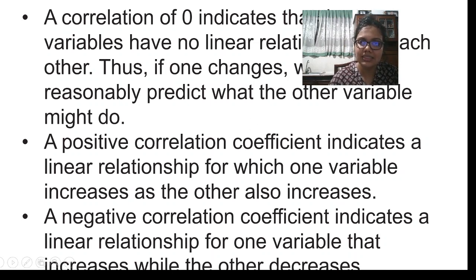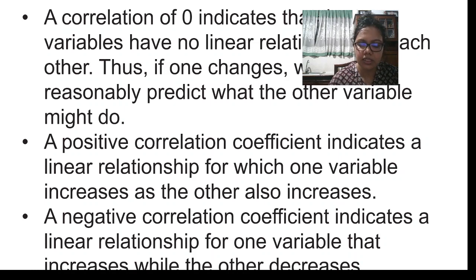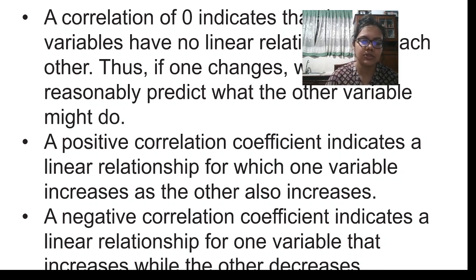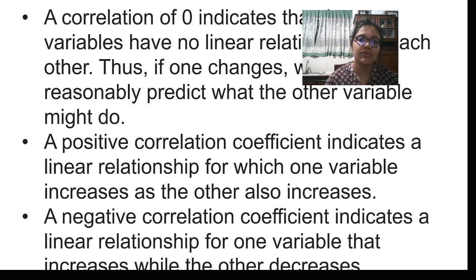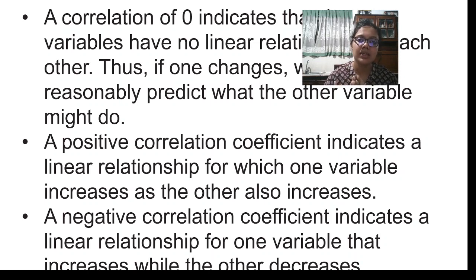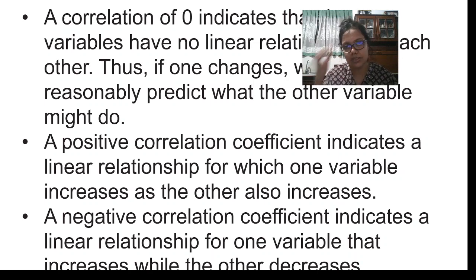A correlation of zero indicates that the two variables have no relationship to each other — if one changes, we cannot reasonably predict what the other variable might do. For example, if the independent variable is the color of the top the lecturer is wearing and the dependent variable is the GPA of the students — after running a correlation in Excel, if you get a value of zero, it means there is no relationship between those two variables.